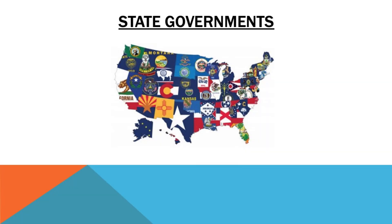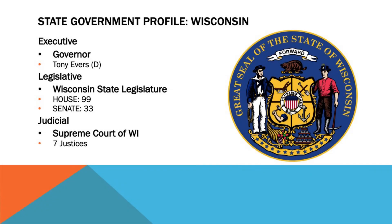State governments have a structural organization similar to that of the national level. Each state has an executive leader, like the president, known as the governor. Each state also has their own legislature, usually a state legislature or a general assembly, just like the U.S. Congress. And states have their own judicial systems, their own state courts, and their own Supreme Courts as well. Let's take Wisconsin as an example. In Wisconsin, the executive leader is the governor, Tony Evers. Wisconsin has its own state legislature with a House and a Senate, and Wisconsin also has its own judicial system — the Supreme Court of Wisconsin with seven justices. The number of offices for each level varies greatly state to state depending on how populous that state is, but the general model prevails.